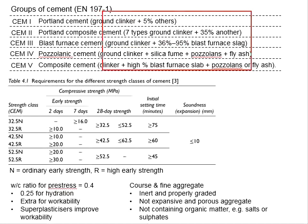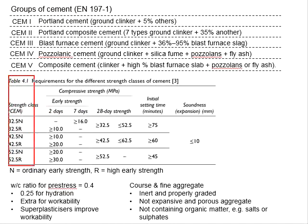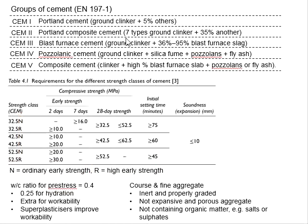Their compositions are listed here. The ordinary Portland cement is classified under CEM1. There are different strength classes of cement: 32.5, 42.5, and 52.5. The N and R designations represent ordinary early strength and high early strength, respectively.